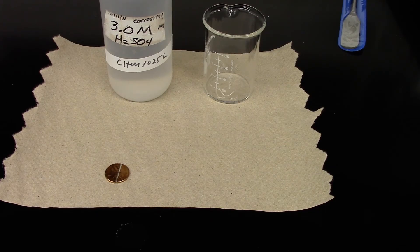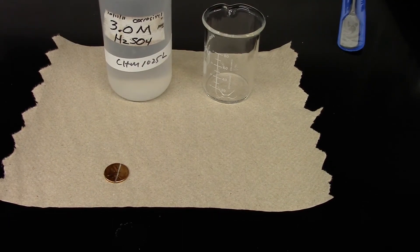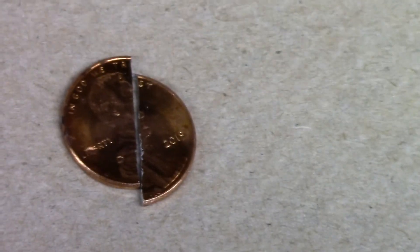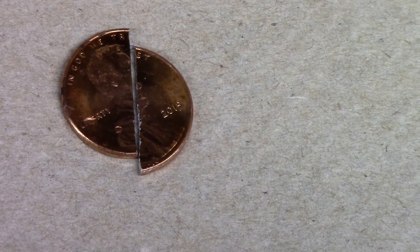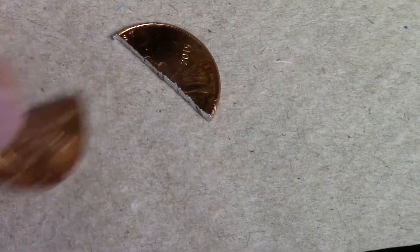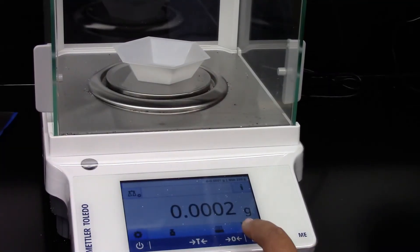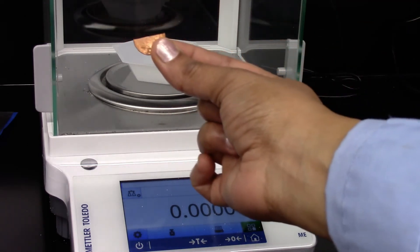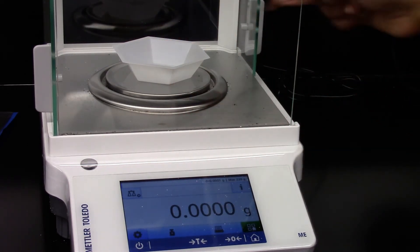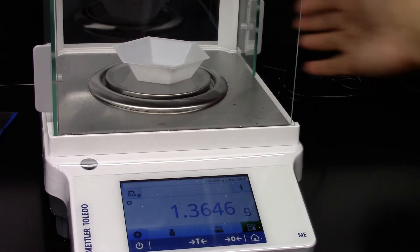So I have a penny cut into two pieces. We're going to look at the mint date. So the mint date is 2015. I'm going to use one of these pieces. I'll tare the balance. And then put my piece of penny in the weighing pan.